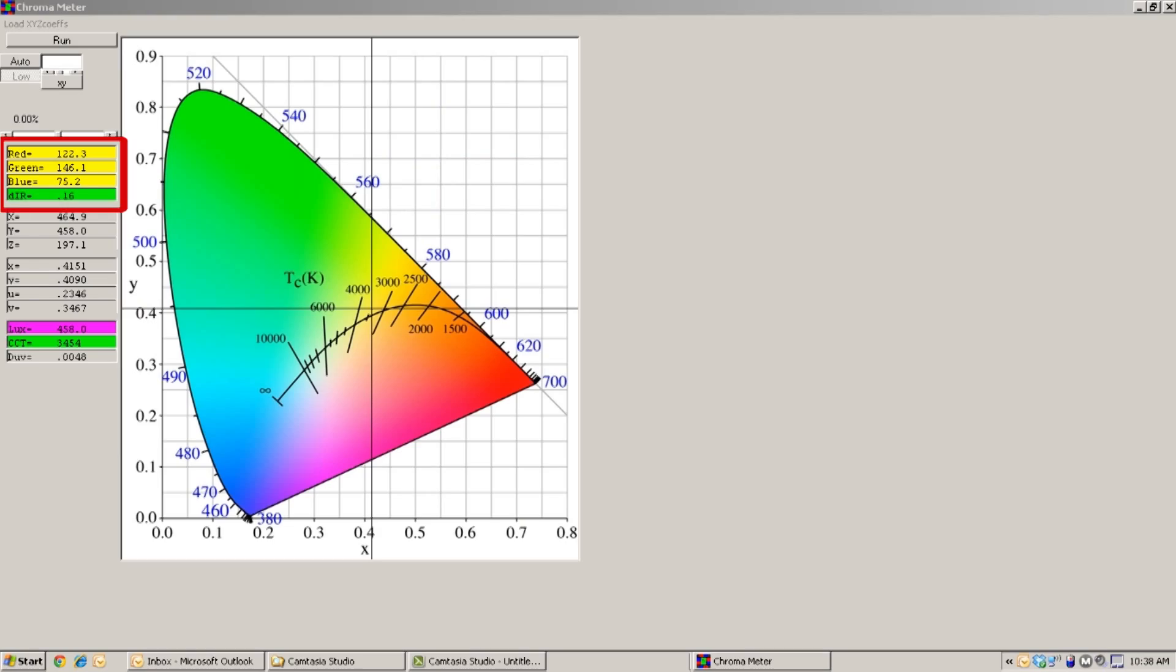You get red, green, and blue. We also do a conversion for you mathematically to XYZ or XYUV, if you prefer. We also give you a measurement, a lux measurement, as shown here. And we do a calculated color temperature for you.